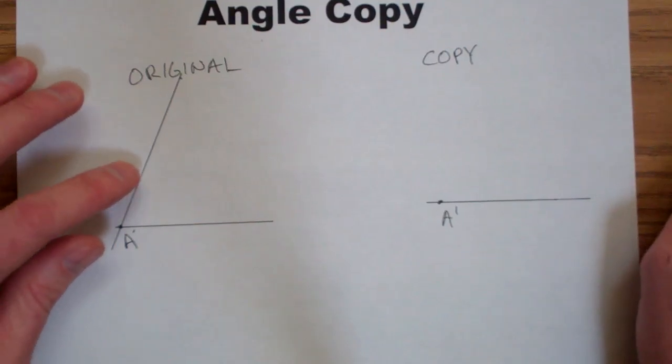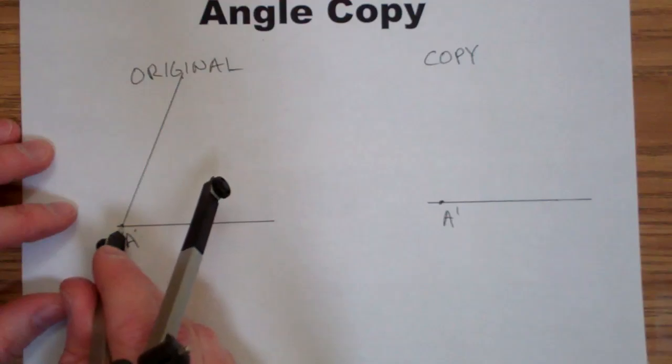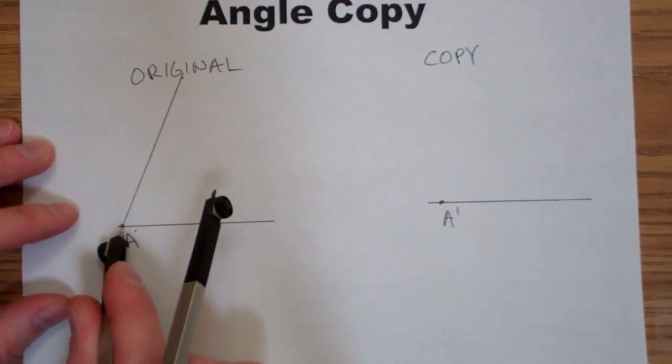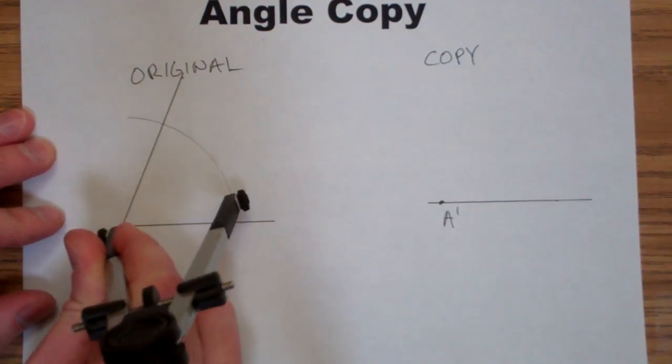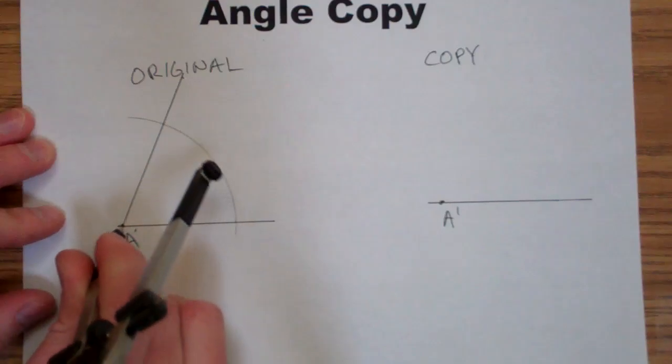Now to copy the other side, I'm going to start by drawing an arc through both sides of the original. I'm going to stab my point into point A, and draw an arc that passes through both sides.